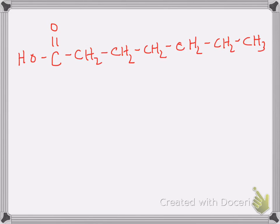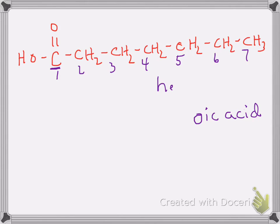Because this is a carboxylic acid, the family name suffix is written as 'oic acid.' The next thing I do is figure out the parent name by counting how many carbons are in the longest chain that contains the carboxyl carbon. We give the carboxyl carbon the lowest number possible — in a carboxylic acid it'll always be one. So let's number this: one, two, three, four, five, six, and seven.